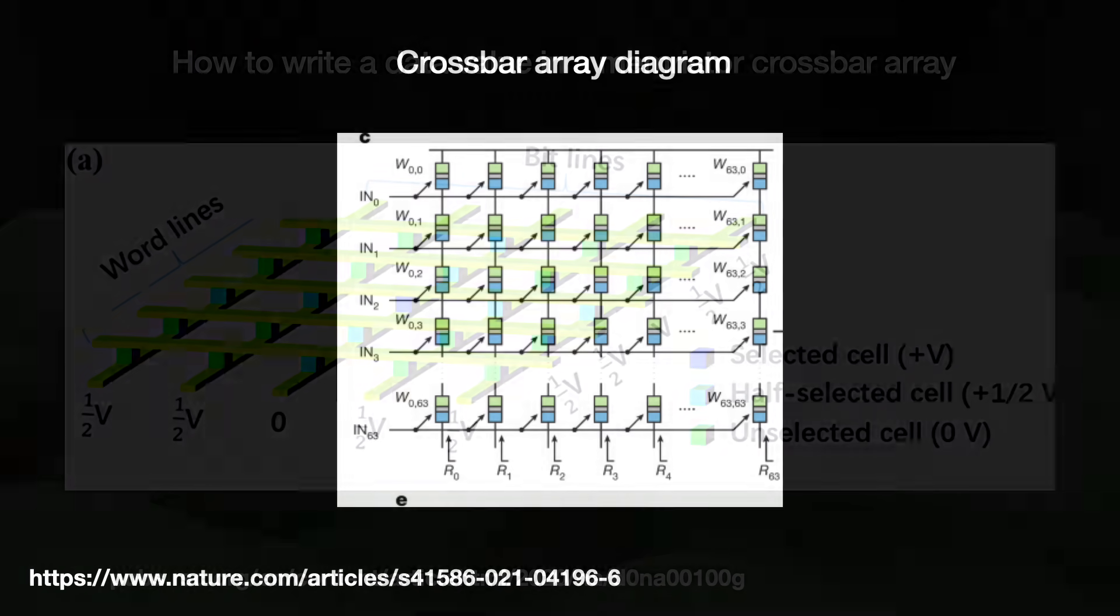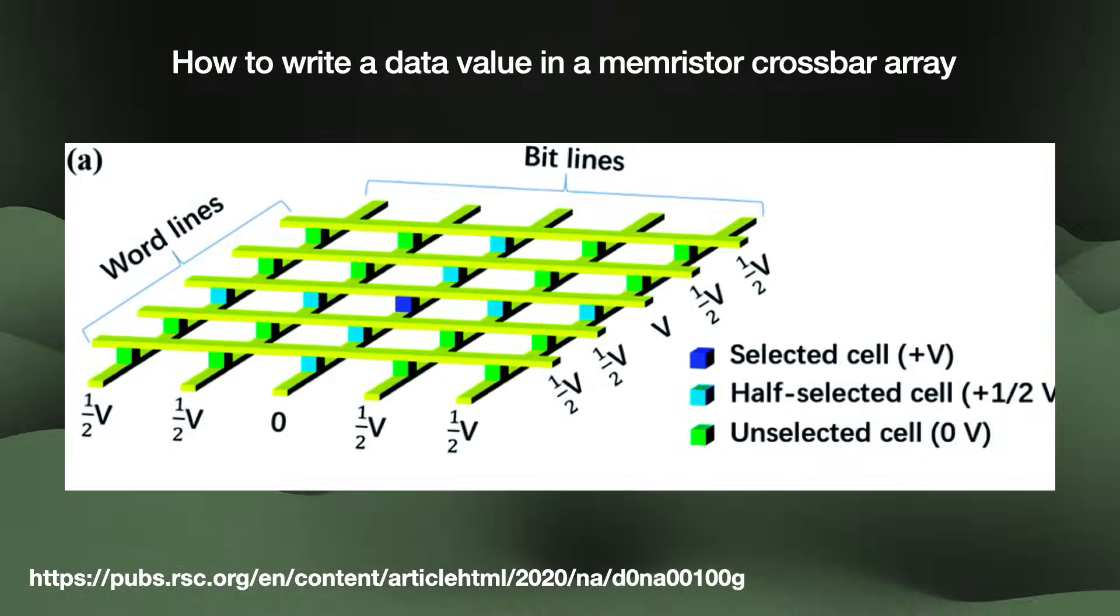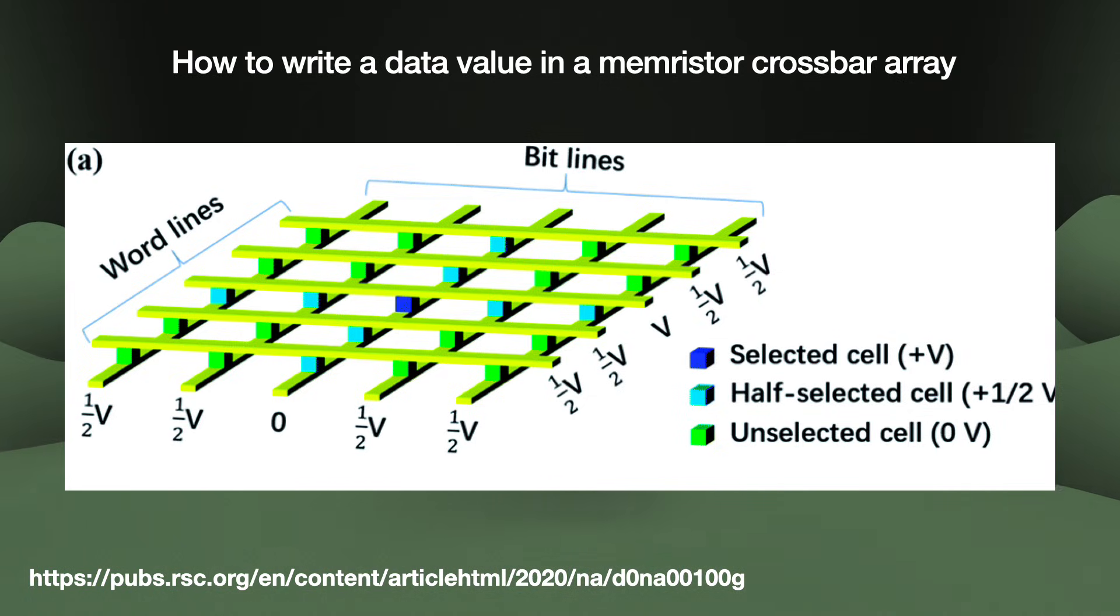Writing a data value is done similarly. Each memristor has a threshold. You activate the top and bottom wires, each one at half that threshold. Only the target memristor, the one that touches both top and bottom wires, receives a voltage high enough to cause it to change. Once the memristors are programmed with their unique resistive values, we can use them to run the AI calculations.